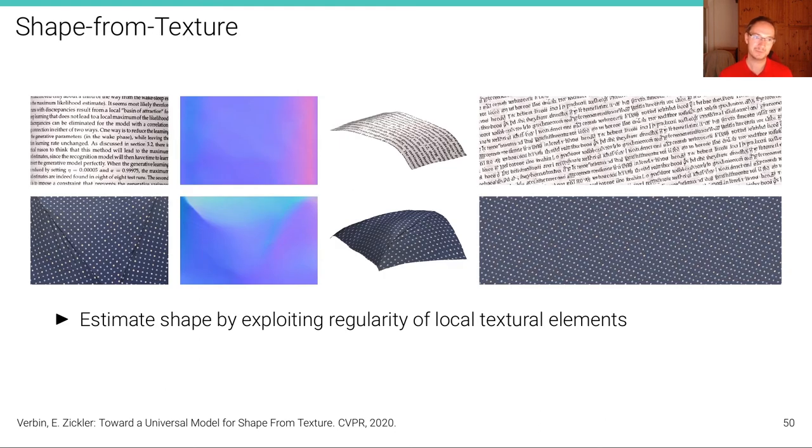Another cue that can be used but is less frequently used because it's a very specialized application area in order to estimate geometry from even a single image is texture. If we have a scene where we know that the texture is locally similar, then we can exploit this regularity to recover geometry. But of course, in general, scenes are not regularly textured everywhere and so it's difficult to apply these algorithms outside this very narrow domain.